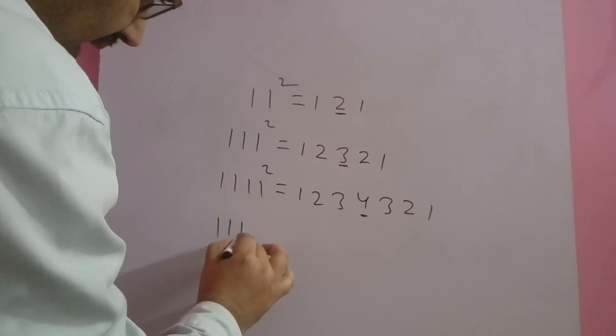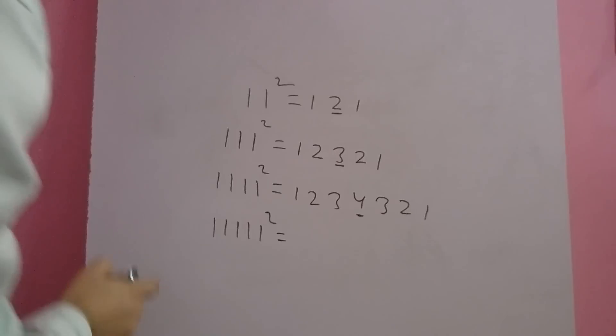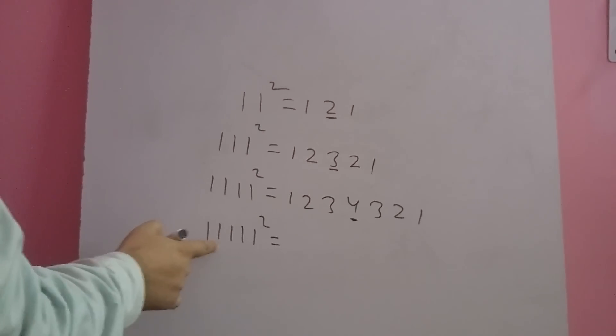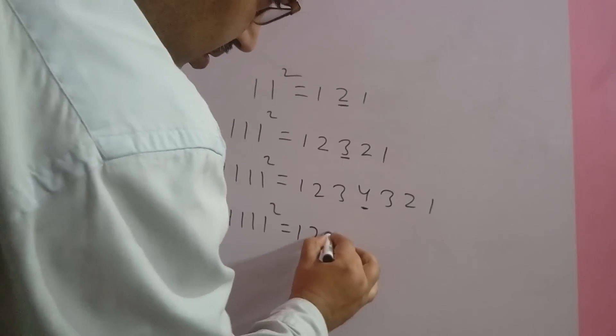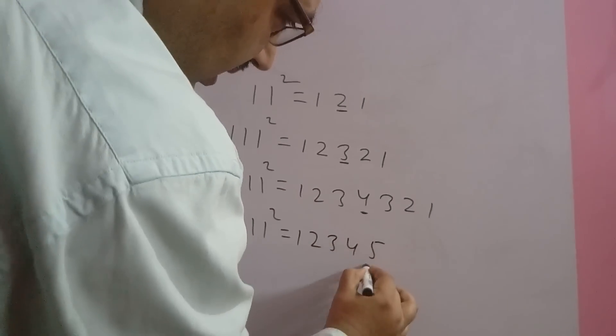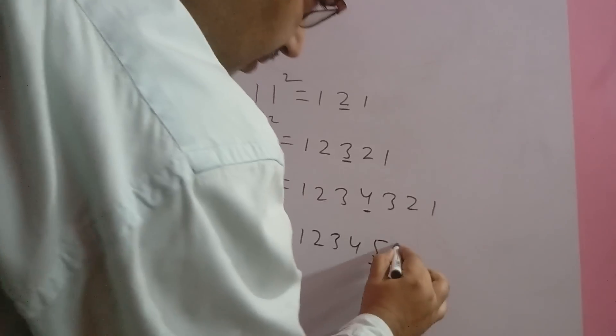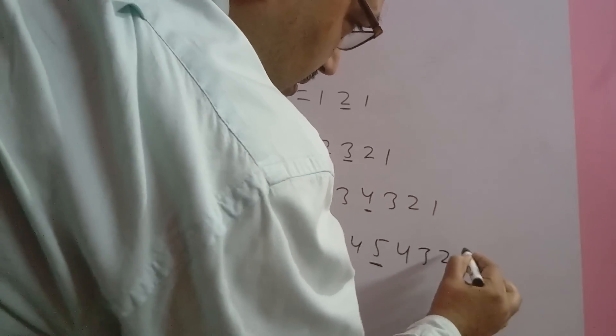Again, 1, 2, 3, 4, 5. Number of ones is 5. We should write 1, 2, 3, 4, 5. This is the maximum number. Then 4, 3, 2, 1.